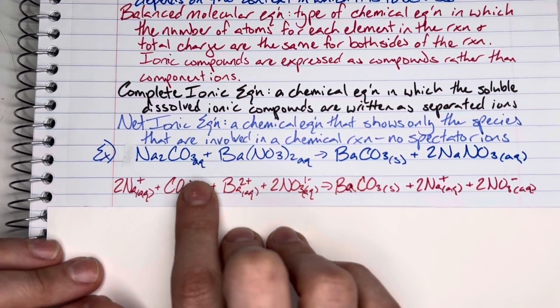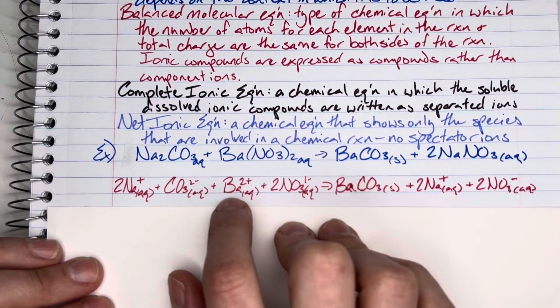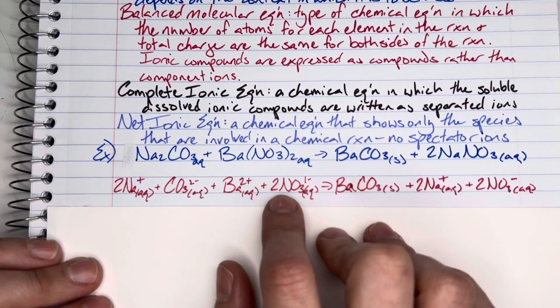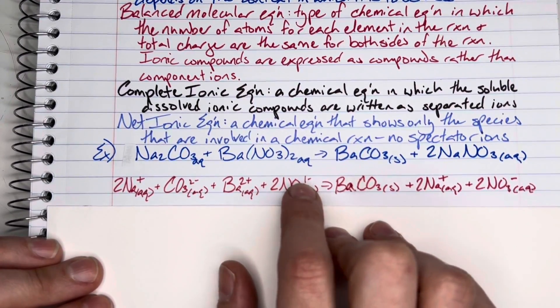I have one carbonate; the carbonate has a charge of negative 2. I have one barium; each barium has a charge of positive 2, and I had two nitrates; each nitrate had a charge of negative 1.